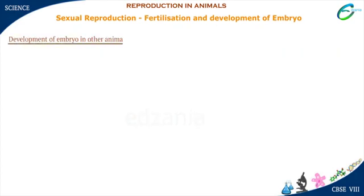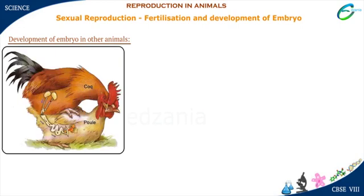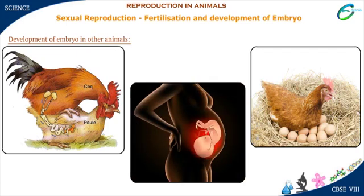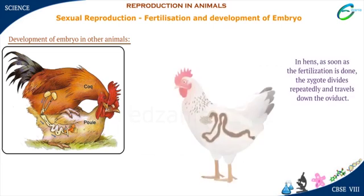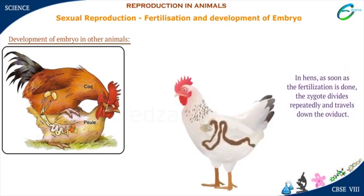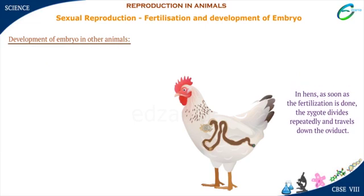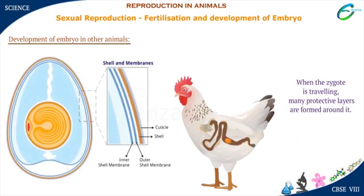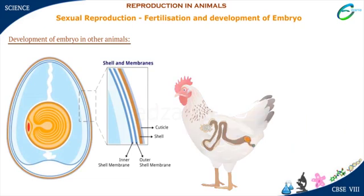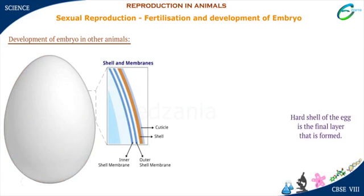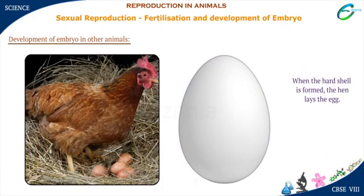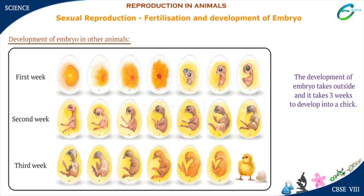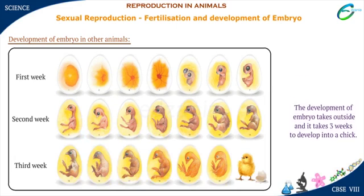Hens also exhibit internal fertilization, but does that mean the development of the embryo in them is the same as in humans? In hens, as soon as the fertilization is done, the zygote divides repeatedly and travels down the oviduct. While traveling, many protective layers are formed around it. The hard shell of the egg is the final layer that is formed. As soon as the hard shell is formed, the hen lays the egg. The development of the embryo takes place outside, and it takes three weeks to develop into a chick.